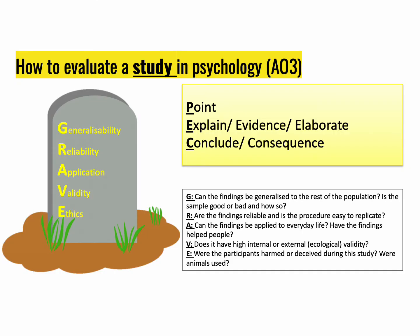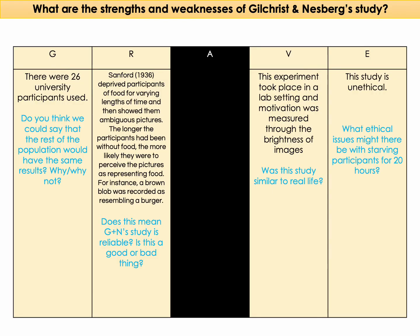Moving on to how you can evaluate this study for at least five marks of AO3 — a reminder of GRAVE is on the screen for you. This is how we evaluate a study in psychology, with some questions to think about. Here are some key points for the Gilchrist and Nesberg study. Pause the video now to think about how you could develop these into effective evaluation points.